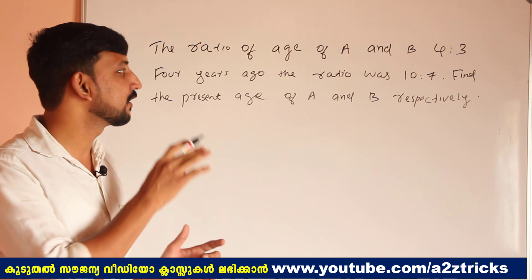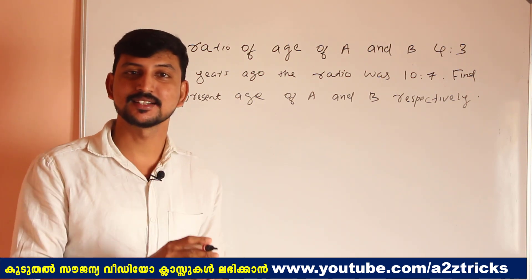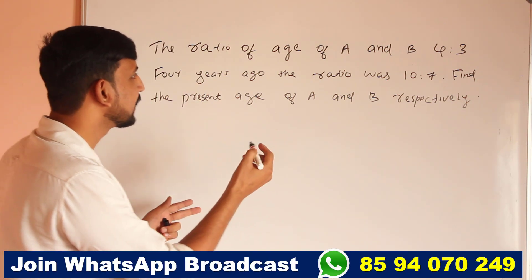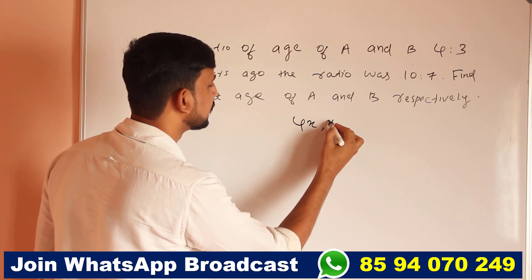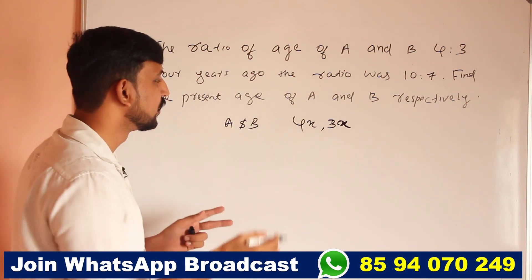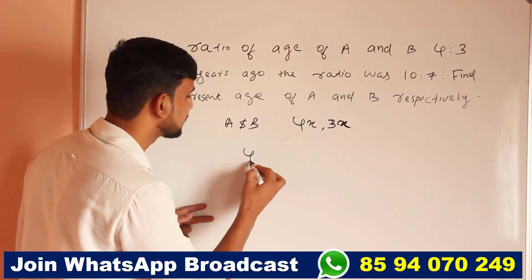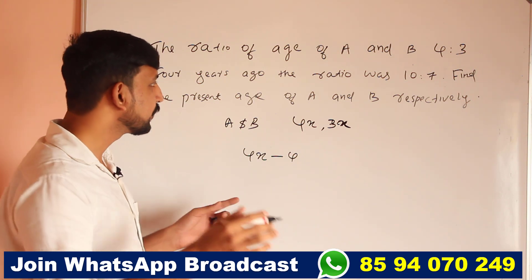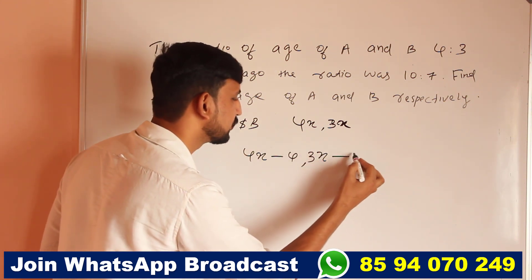Now the age of A and B is 4 to 3. Four years ago the ratio was 10 to 7. We will let the present ages be 4x and 3x. A and B are represented by 4x and 3x. That's why I'm going to say that the equation uses 4x minus 4 and 3x minus 4.